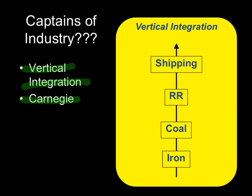For instance, since Carnegie does this, we'll use steel. What's the raw material needed to make steel? Iron. So Carnegie goes out and he buys himself some iron mining companies. Now, he already owns the steel mills — that's where he makes his money — but he goes out and buys himself some iron mining companies.